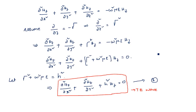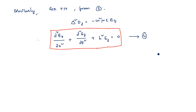We obtained equations three and four: ∂²Hz/∂x² + ∂²Hz/∂y² + h²Hz = 0, that is for the TE wave. And ∂²Ez/∂x² + ∂²Ez/∂y² + h²Ez = 0, that is for the TM wave.